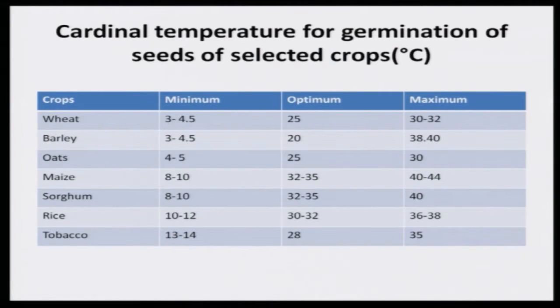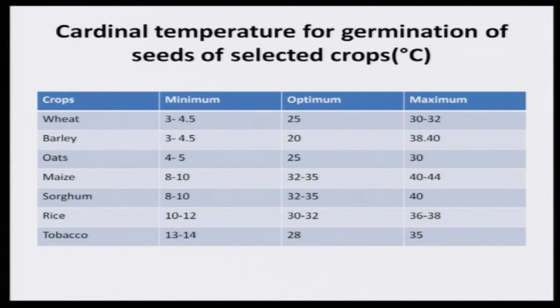Examples are given for barley, oat, maize, sorghum, rice, and tobacco — crops from both temperate and tropical situations. The minimum temperature requirement for tropical crops like maize, sorghum, rice, or tobacco is 8 to 10 degrees centigrade. But for temperate crops, the minimum is 3 degrees centigrade. This shows how crops are adapted to their temperature situations. In the absence of cardinal temperature conditions, growth is affected — which is why, with climate change resulting in a warmer world, crop production gets impacted.